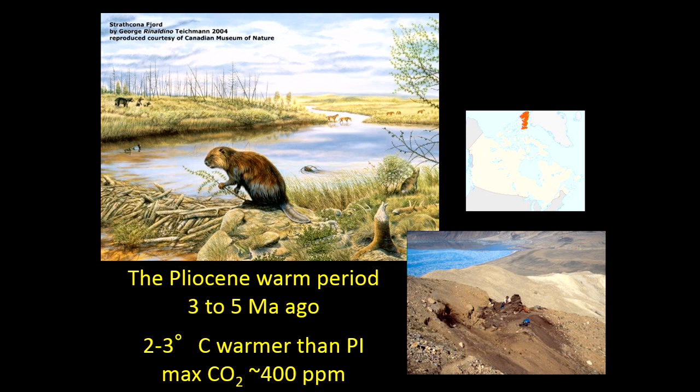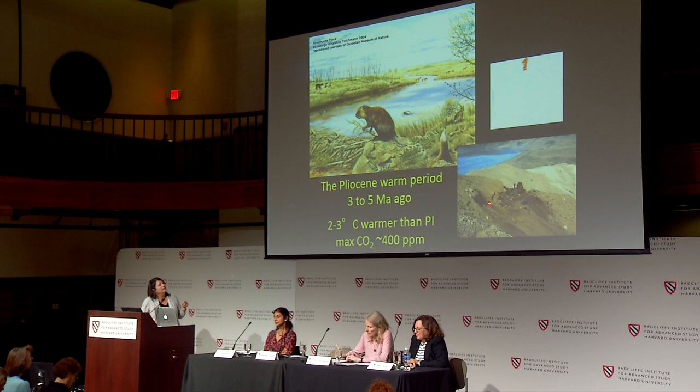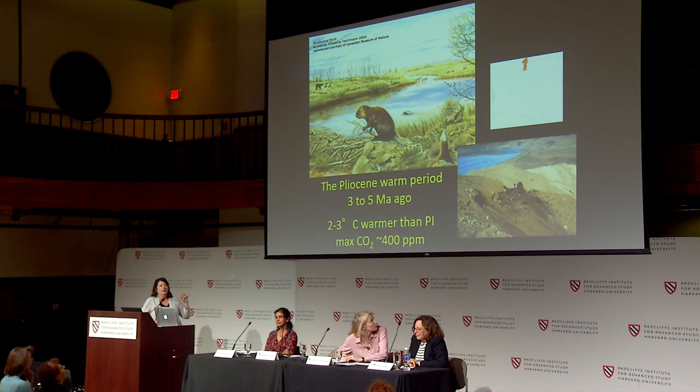How sensitive are these ice sheets to a modest global warming — say one degree Celsius warmer than today? I know about a time period widely agreed to have been two to three degrees warmer than pre-industrial, which would be one to two degrees warmer than today. At that time, atmospheric CO2 was about 400 ppm — exactly what it is today, about 401 ppm this week. An artist's reconstruction based on fossils from Ellesmere Island shows what the north coast of Greenland looked like three million years ago: the Greenland ice sheet did not exist.